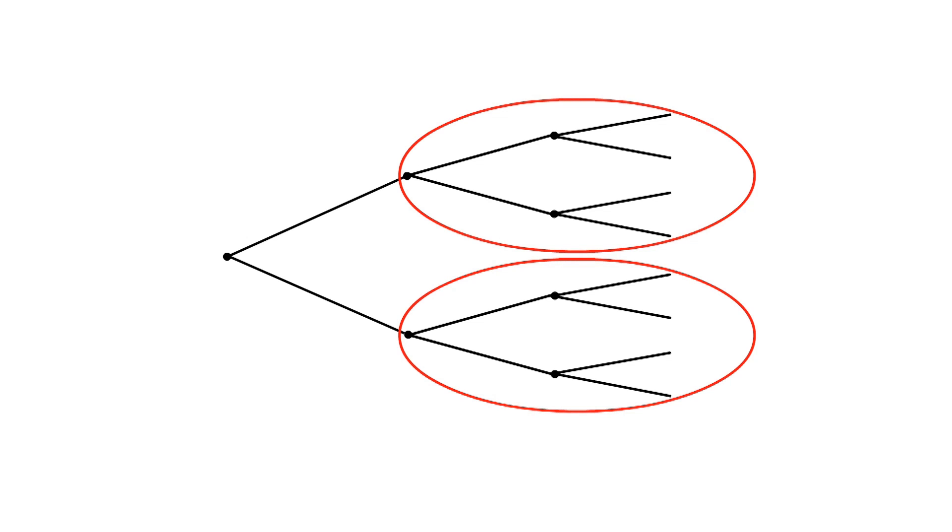It's quite easy to understand how sub-games work using the extensive form when describing the game. In this game tree, there are six separate sub-games. Other than the game itself, we have two main sub-games, which in turn contain two more sub-games each.